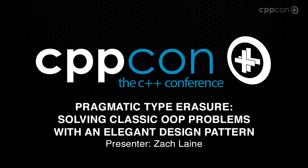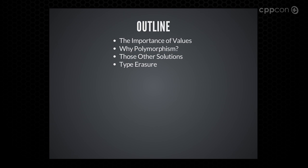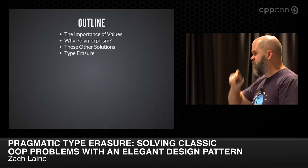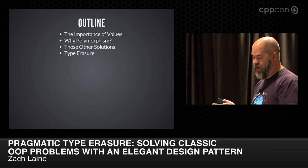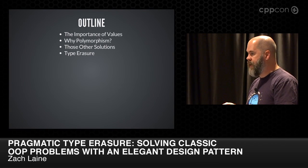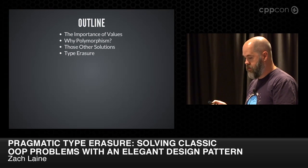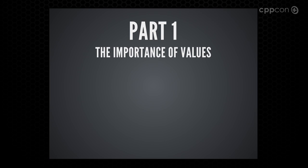I'm going to start with a little bit about value types because they're an important motivation for why you should use type erasure. I'm not going to stick on that too much because there have been other talks that cover this very well and it would about double the size of my talk. Then I'm going to talk about why we use polymorphism at all from first principles, what are we trying to achieve with it, and I'm going to show you why the current solutions we commonly use are inferior to type erasure.